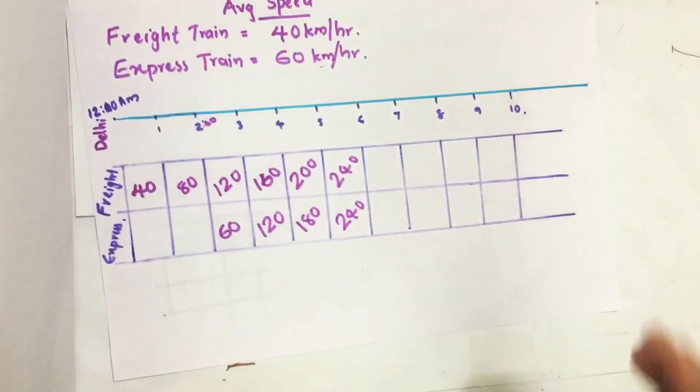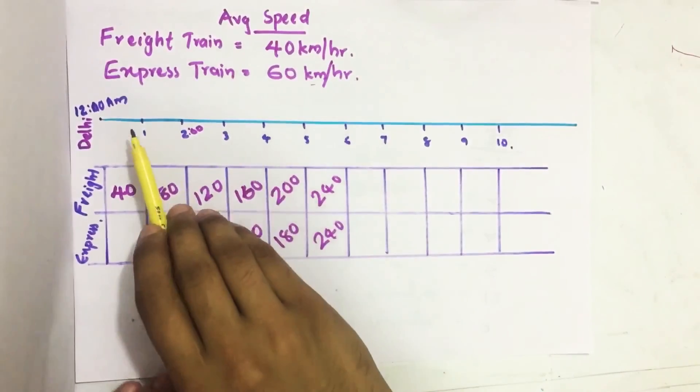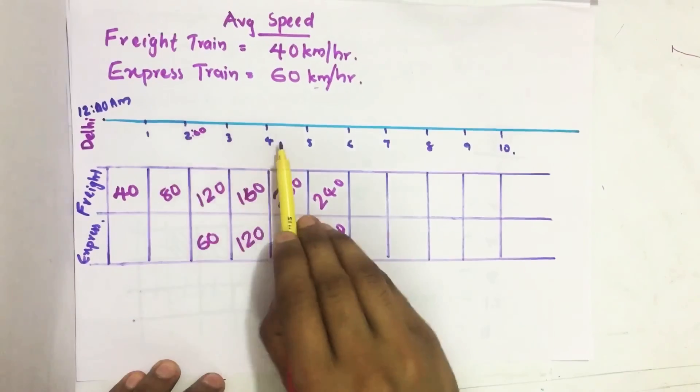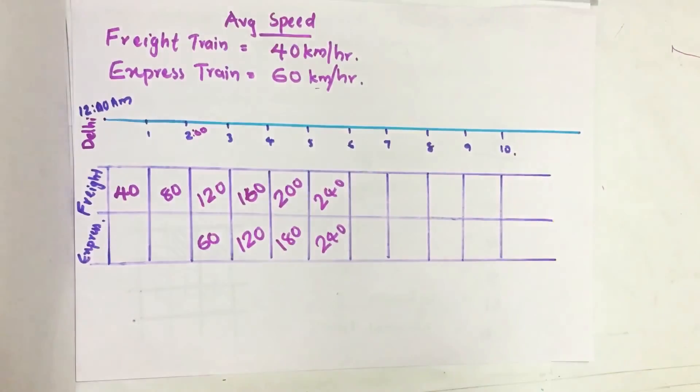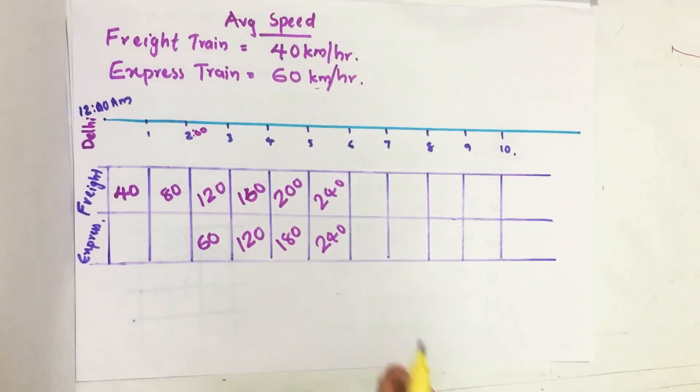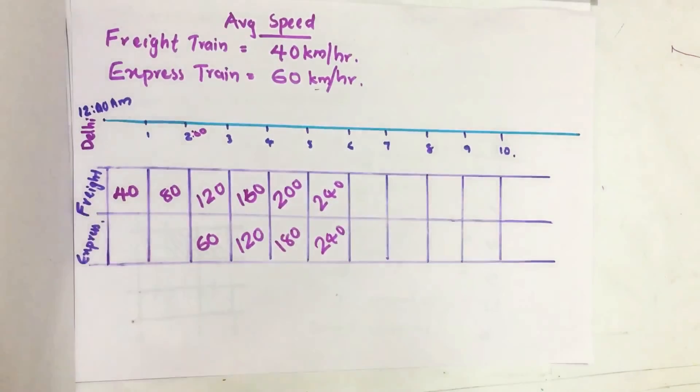If they ask after how many hours they will meet, we can count: one, two, three, four, five, six. After six hours of journey by the freight train, these two trains meet again.